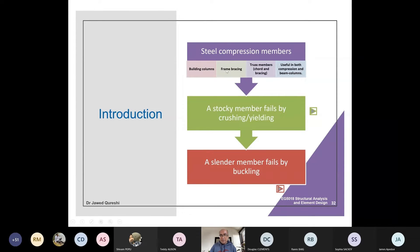We use compression members as building columns in frames and bracing, as truss members in cords and bracing, and as beam columns as well. Columns or compression members are essentially of two types: stocky, bulky, or heavy columns—don't use obese in technical language, just use stocky.